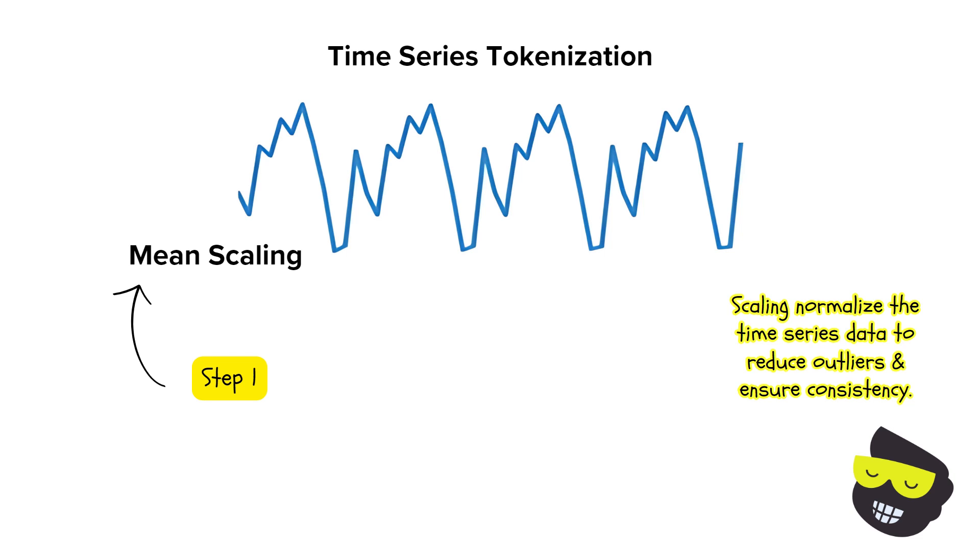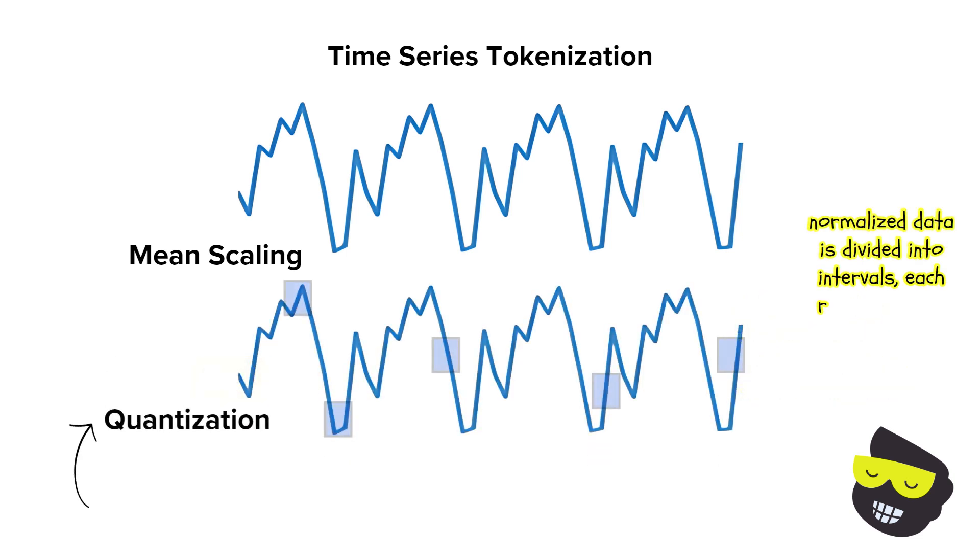This helps in reducing the effect of outliers and makes the data more consistent. Then we have quantization. This normalized data is then divided into discrete intervals, each representing a range of values. For instance, temperatures might be grouped into ranges. Let's say 70 to 72, 73 to 75. Each range is then assigned a specific token, turning the continuous data into a sequence of tokens.